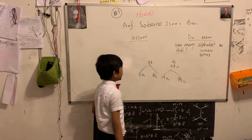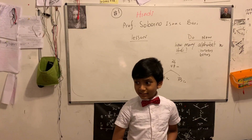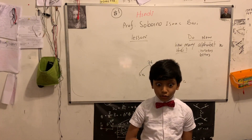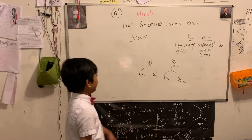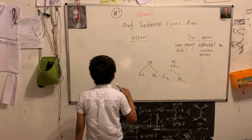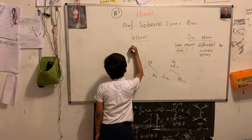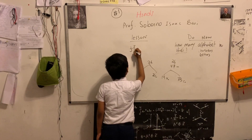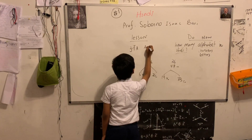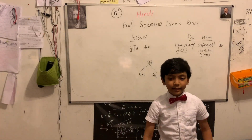For the lesson today, we're going to be looking at the first 5 letters. And since there are 44, we can make many more lessons out of this. Hindi is a very difficult language. So for the lesson, we're going to start with A. A for Anar. You will be asked to write these in English for the lesson.